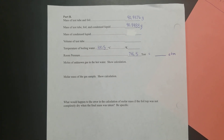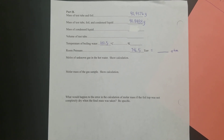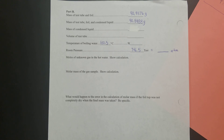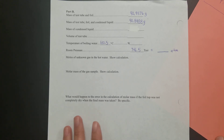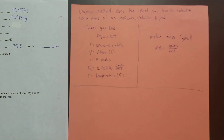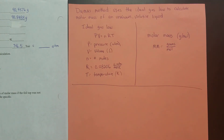This video is to help with the calculations for Part B of the Gas Concepts Lab. Before you do these calculations, please watch the video on how the data was collected. For Part B of the Gas Concepts Lab, we are using what is called the Dumas Method to figure out the molar mass of an unknown, volatile liquid.